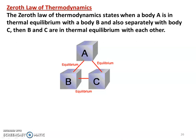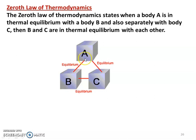The zeroth law of thermodynamics states: when a body A is in thermal equilibrium with a body B, and also separately with a body C. What is thermal equilibrium? Temperatures are equal. So A's temperature equals B's temperature, and A's temperature equals C's temperature.